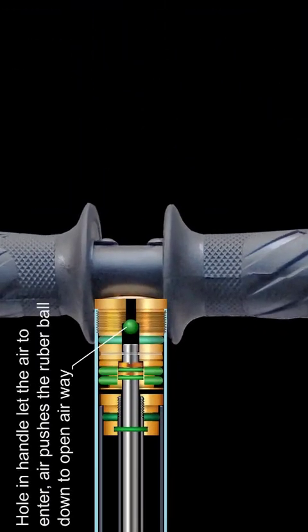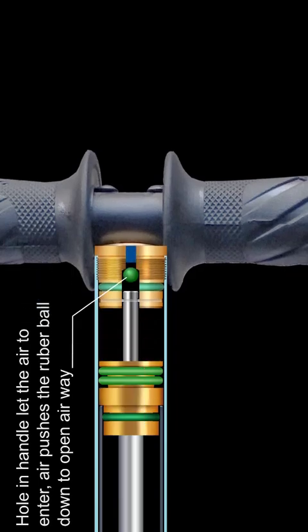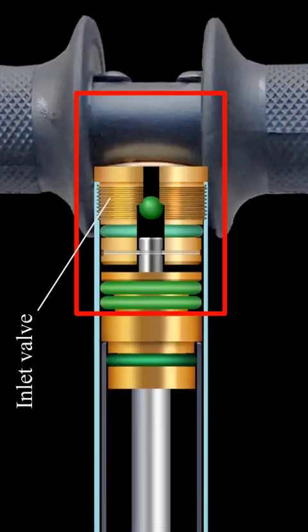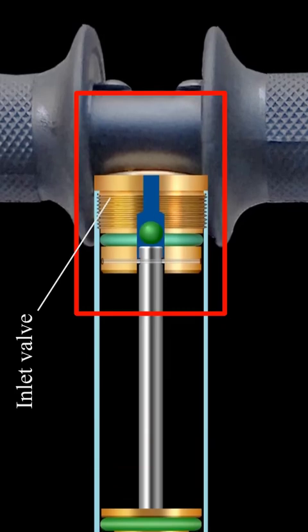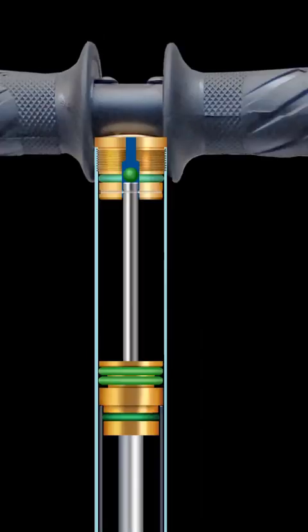When air enters, it pushes the rubber ball down to open the airway. When the handle is pulled, air enters into the first tube through the hole in the handle.